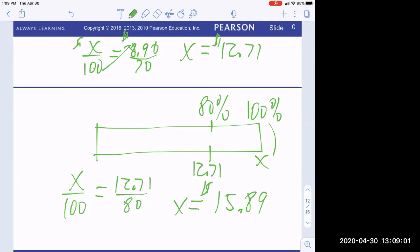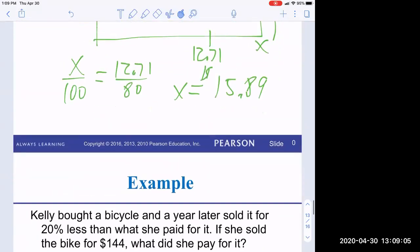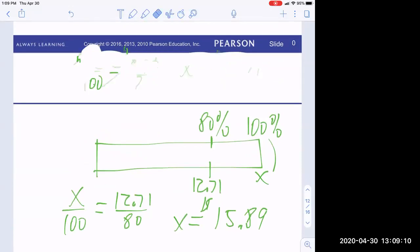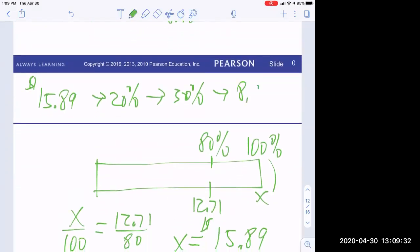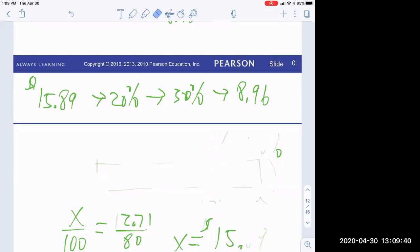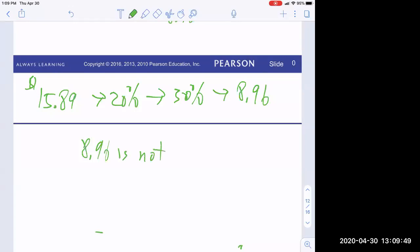Okay. I want you to look at something since I have this. I'll do it up here. Okay. So originally it cost $15.89. It underwent 20%. Then 30% off that. And I ended up at $8.96. Notice that $8.96 is not half of $15.89. It's not 50% of $15.89. Why not? Pause and think about that for a second.